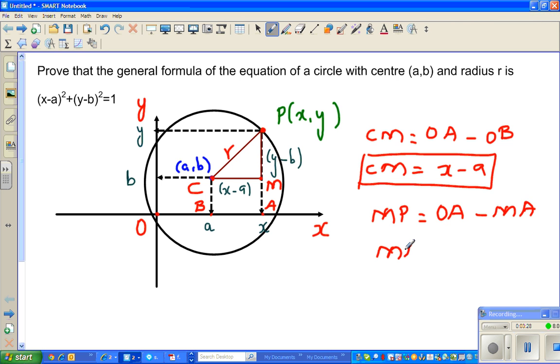So MP is PA minus MA. The distance from, this is PA, this distance minus MA. So the distance between P to A is your y and the distance between M to A is b.